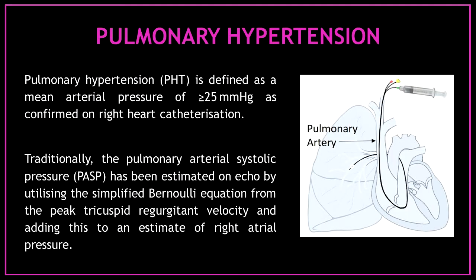First, let's talk about pulmonary hypertension — I'm going to cover this very briefly, but if you want more information, I have a video about this on my YouTube channel and I will leave the link in the description. Pulmonary hypertension is defined as a mean arterial pressure of 25 mmHg as confirmed on right heart catheterization.